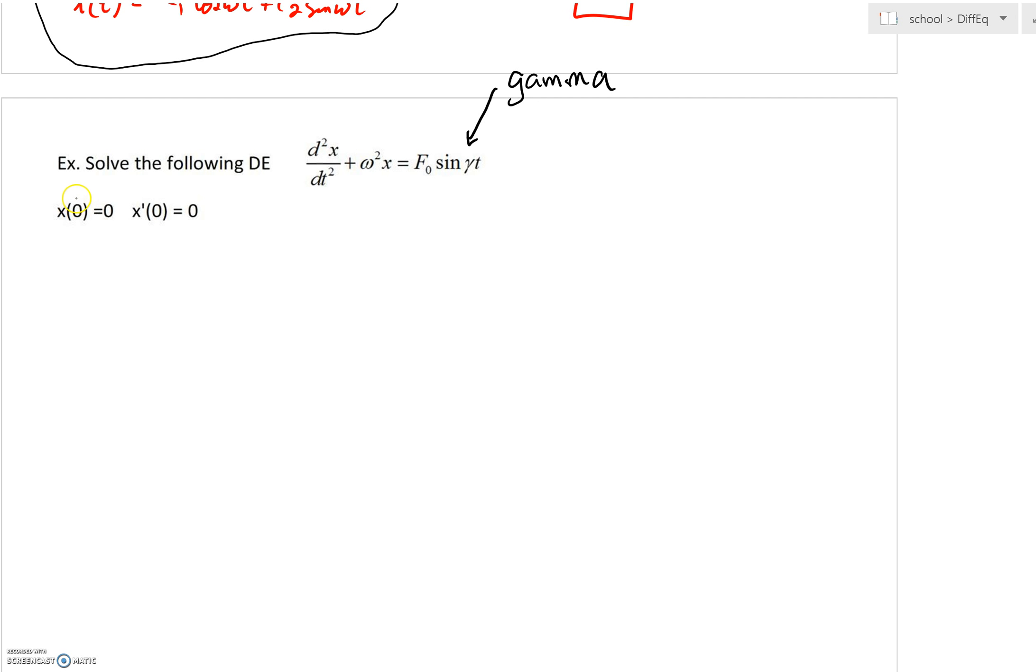We'll just write it as a constant. Obviously, that is going to affect the period. As we're looking here, we can also note that we have an initial value problem.